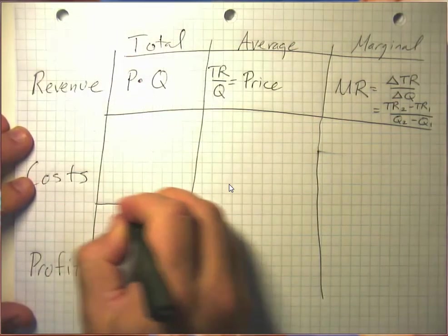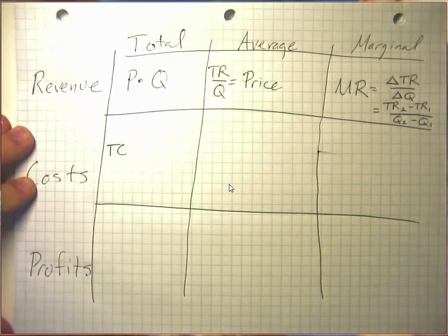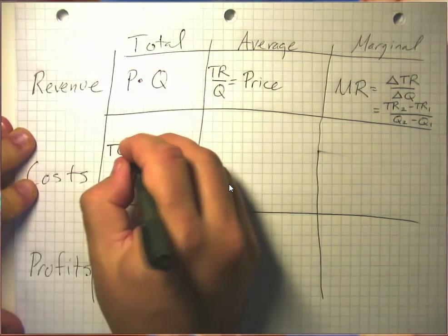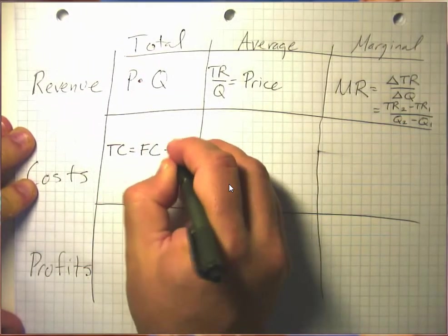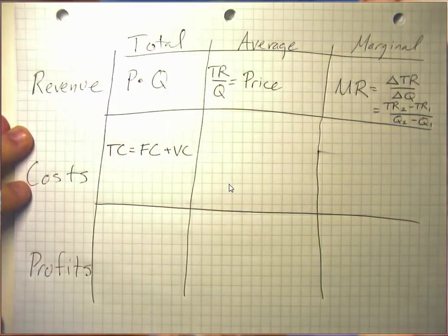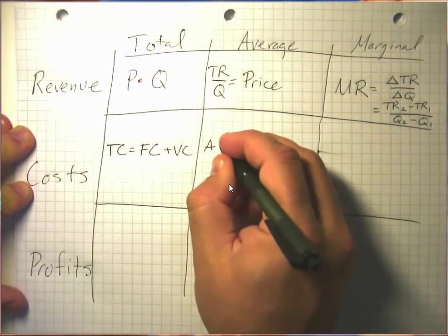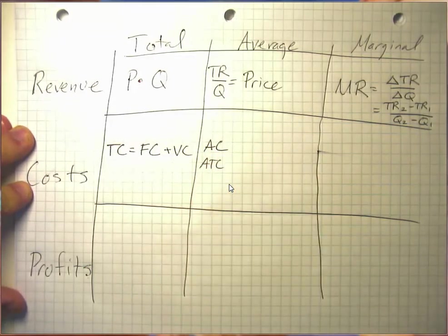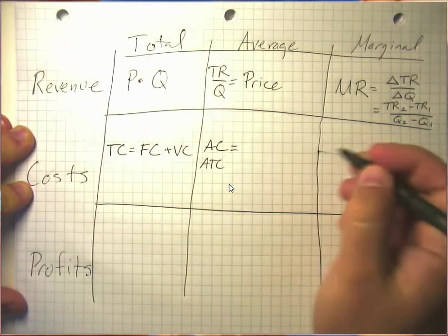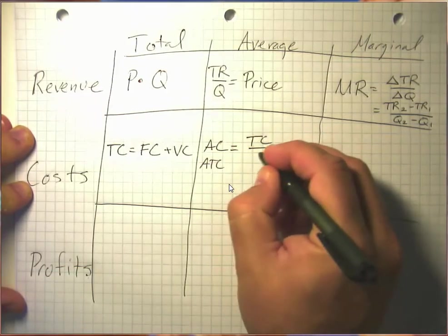What about costs? Total costs, often abbreviated TC, we often compute these as fixed costs plus variable costs. Average costs, sometimes written AC, sometimes written ATC, we compute as total cost over quantity.